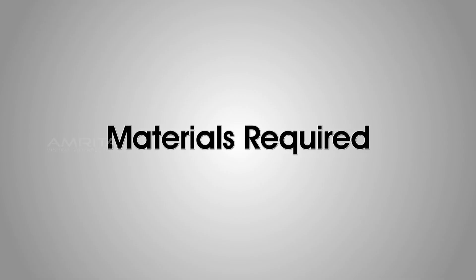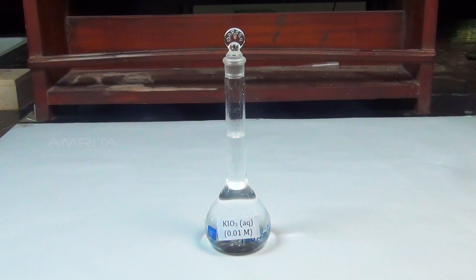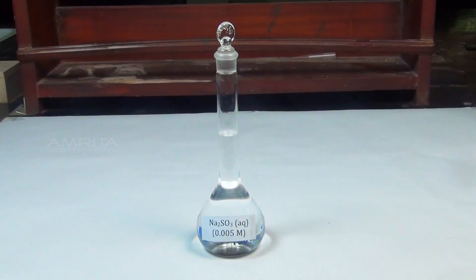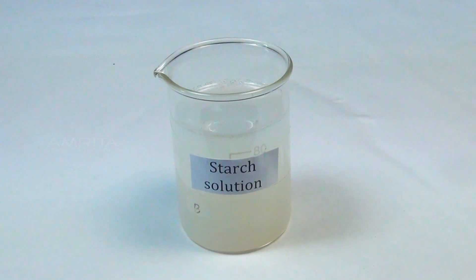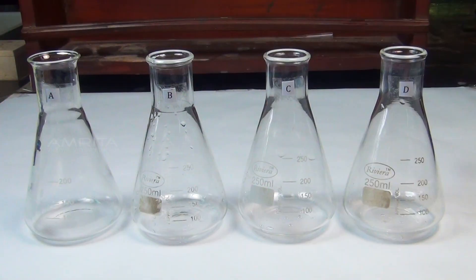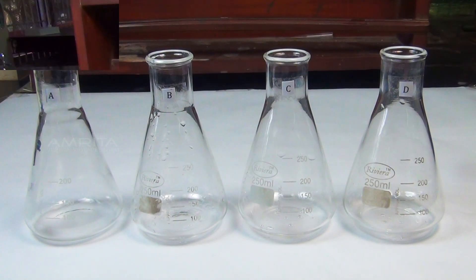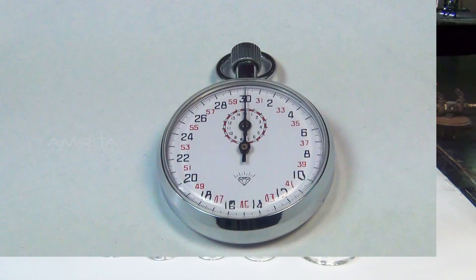Materials required: 0.01 molar potassium iodate solution, 0.005 molar sodium sulphite solution, 1 molar sulphuric acid, freshly prepared starch solution, 4 250 ml conical flasks, measuring cylinders and stopwatch.